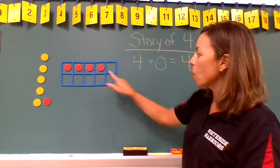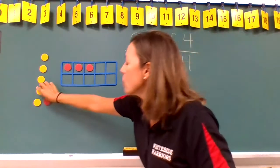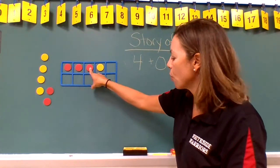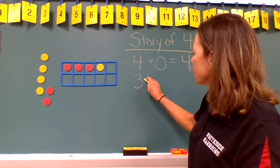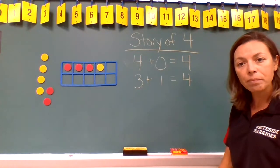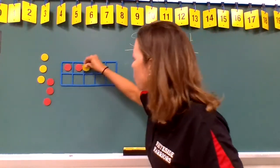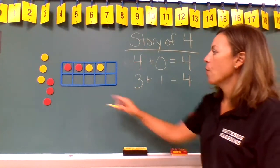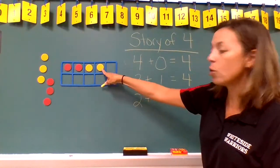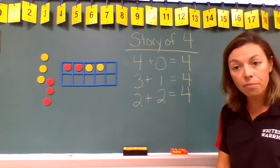Now we're going to take one of those red counters away and replace it with a yellow counter. So now we have one, two, three red plus one yellow, which also equals four. Let's replace another red with a yellow. Now we have one, two red plus one, two yellow. Two plus two is another way of making four.